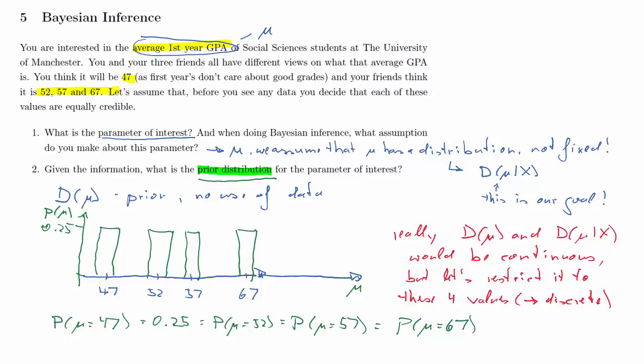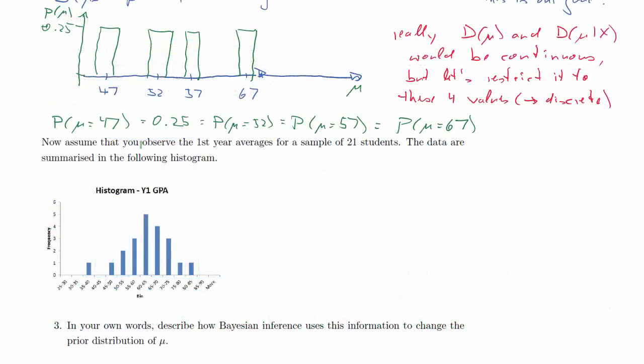So let's expose this setup to some data. This is now the next step. And then we'll see what happens in Bayesian inference. So here's the data. We have a sample of 21 students. Here's a histogram of their first year GPAs.